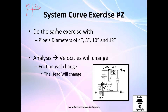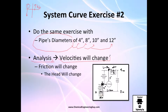In this exercise number two, we're going to check out the difference if we wanted to change the pipe diameters into four, eight, or even greater diameters. The main analysis will be that the velocities will change. Every time you change the diameter, velocity drops by squares. So the velocity will change not only because of the velocity heads, but also because of the friction heads.